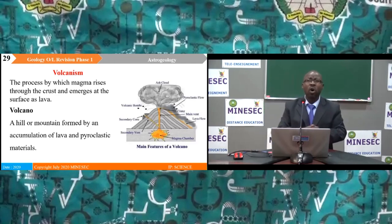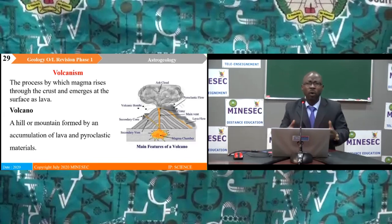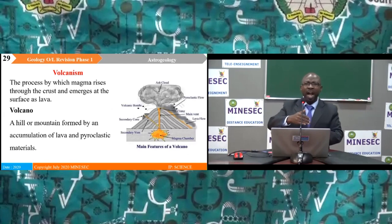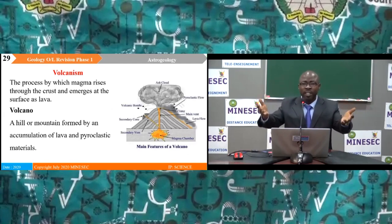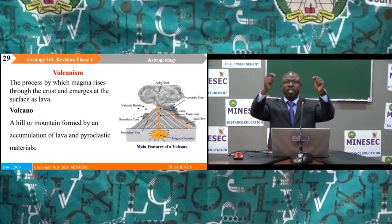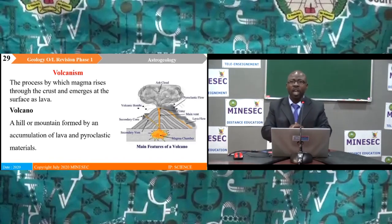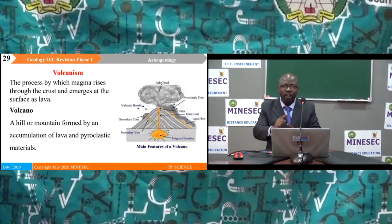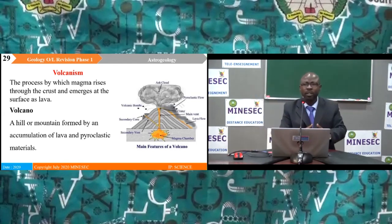Earthquakes are often associated with volcanic activities. Volcanism is the process by which magma rises through the crust and emerges at the surface as lava. A volcano is a hill or mountain formed by the accumulation of lava and pyroclastic material. A volcano has three characteristics: the magmatic chamber, the vent, and the crater.